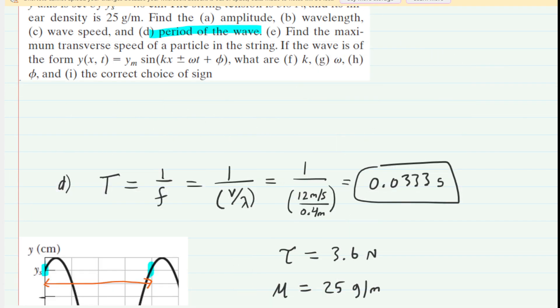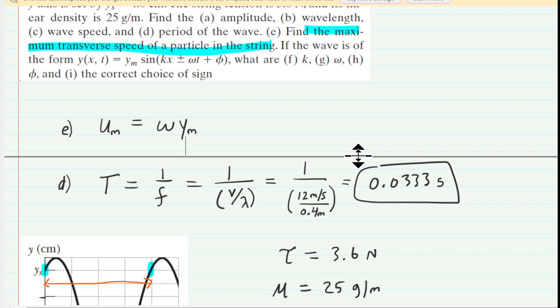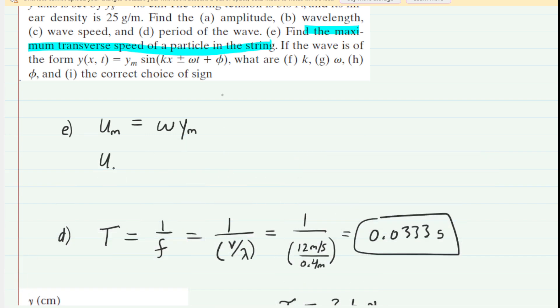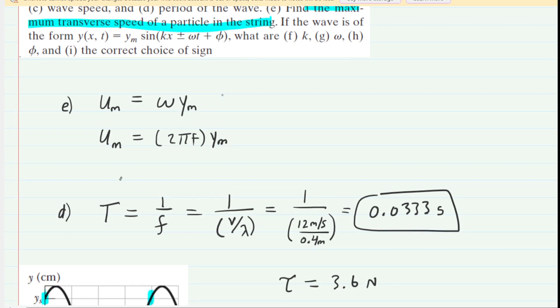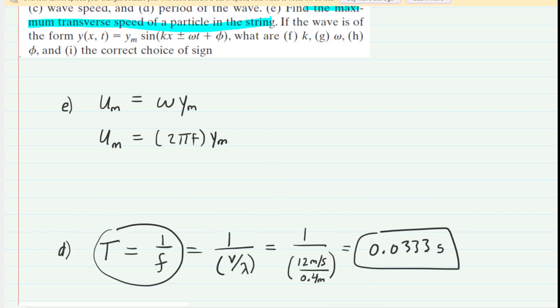Next, we need to find, in part E, the maximum transverse speed of a particle in the string. And we know that the maximum transverse speed is equivalent to the angular speed multiplied by the amplitude. And we haven't really figured out omega yet. But we can do so because we know that omega is equivalent to 2 pi times the frequency. So we can actually replace omega with 2 pi f. And then we haven't really calculated the frequency either. But we know that frequency is the reciprocal of period. If you look back at this equation right here, if you were to solve that for the frequency, you would get 1 over the period. So if we make a little bit of room here, we can make another substitution for the frequency. We're going to put in 1 over the period.